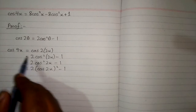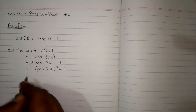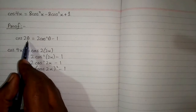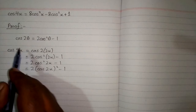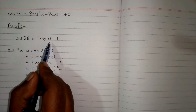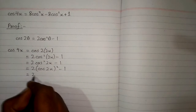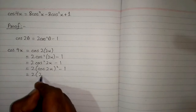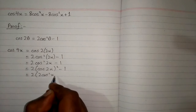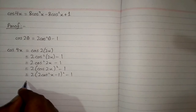Now we apply the formula again. This time we have x in place of θ, so since cos(2θ) = 2cos²θ − 1, we get cos(2x) = 2cos²x − 1. Substituting, we have (2cos²x − 1)² − 1.